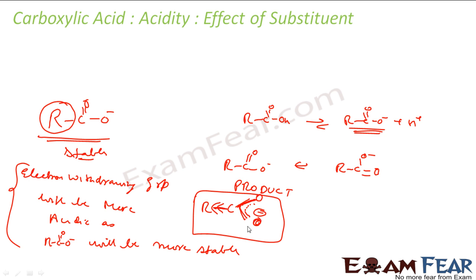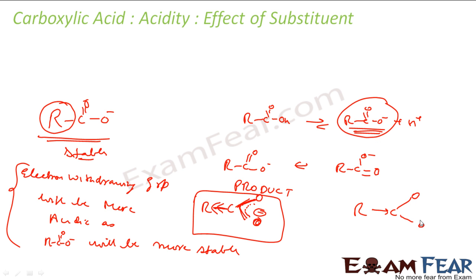Remember, we are thinking from the perspective of the product. We need RCOO⁻ to be more stable. If an electron-withdrawing group is present, it stabilizes the negative charge by distributing it — making the product stable and the acid more acidic. An electron-releasing group does the opposite: it adds electrons to an already negative center, making the product unstable and the acid less acidic.